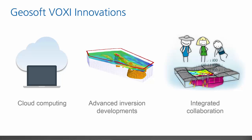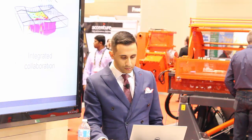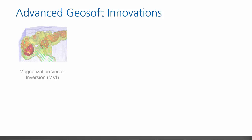Geologists, geochemists, and geophysicists now have a common place to merge their datasets and create integrated 3D models. Voxi is powered by advanced innovations in inversion, including magnetization vector inversion, which uses magnetic field observations to determine the distribution of subsurface magnetization. It takes into account effects due to remnant magnetization and anisotropy. In a wide variety of geological situations, this is far more applicable than conventional susceptibility modeling and yields results that correlate better to known structure.